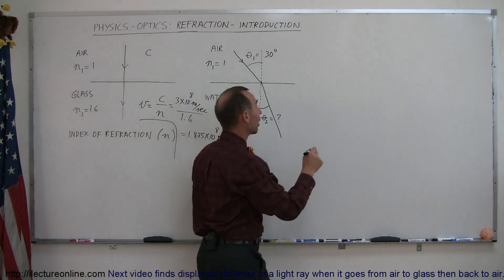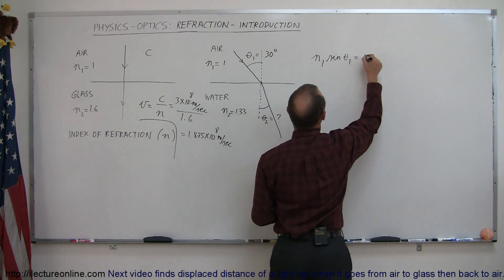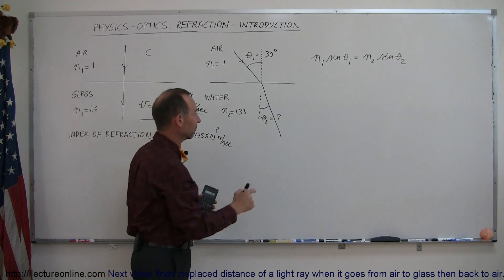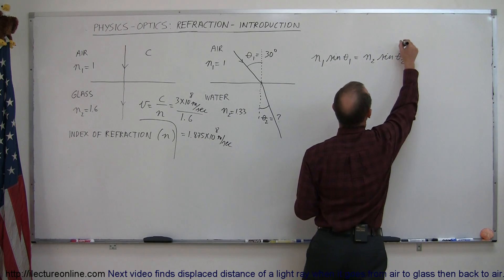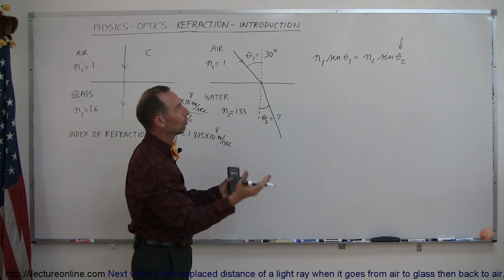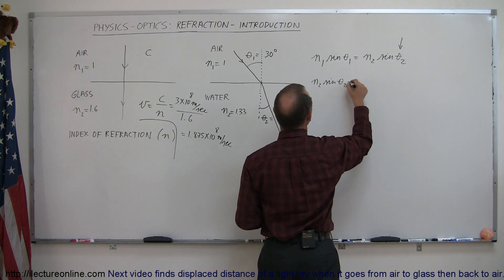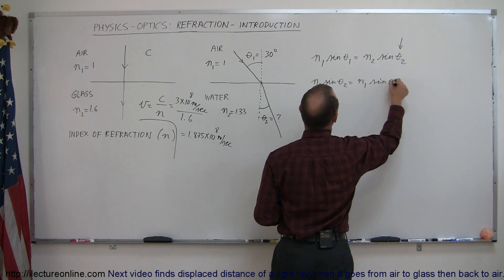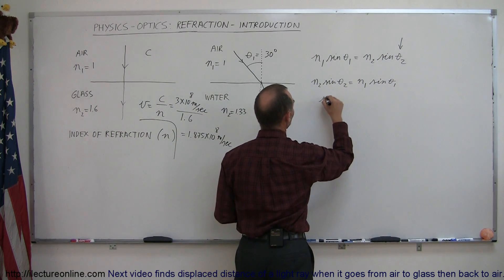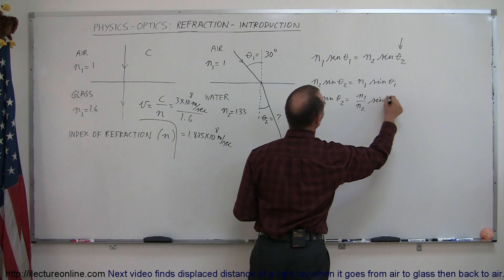It turns out that Snell's law enables us to do that. Snell's law says that n1 times the sine of theta 1 equals n2 times the sine of theta sub 2. What we're trying to find is the angle sine of theta sub 2, which means we have to algebraically solve for that angle. We're going to flip the equation around, so n2 times the sine of theta 2 equals n1 times the sine of theta sub 1. Then we're going to divide both sides by n sub 2, so the sine of theta sub 2 is equal to n1 over n2 times the sine of theta sub 1.